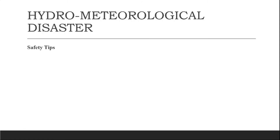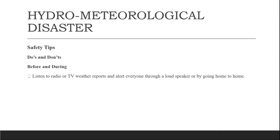Now for safety tips — we will discuss what to do and what not to do before, during, and after a cyclone disaster. Before and during a cyclone: first, listen to radio or weather reports and alert everyone through loudspeakers or by going door to door. Second, identify safe shelter in your area — it should be cyclone-resistant — and also find the closest route to reach it.